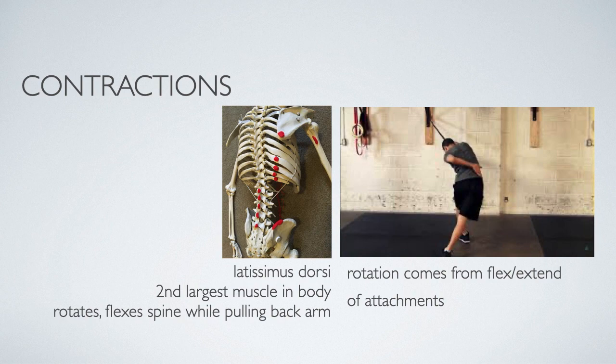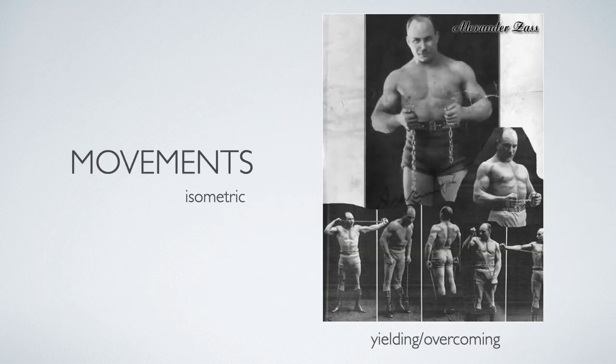In thinking about movements, it's important to consider planes of motion. Are we just moving a weight up and down in the sagittal plane, or do we start to move into different planes of motion? One very popular strength training approach is called isometric, in which you hold a particular joint angle and apply tension. This is either a yielding or an overcoming isometric. For example, if you push your hands into a wall and really focus on the muscles of the back of your arms or your spine, you would be trying to overcome the wall.